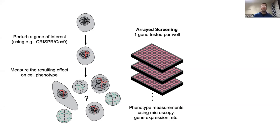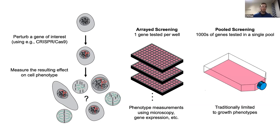More recently, biologists have started to use what's called pooled screening. In this case, you have a large population of cells where each cell has a different gene perturbed. In this way, you can test thousands of genes in a single sample or a single pool of cells. However, traditionally, these sorts of pooled screens are limited to growth phenotypes.